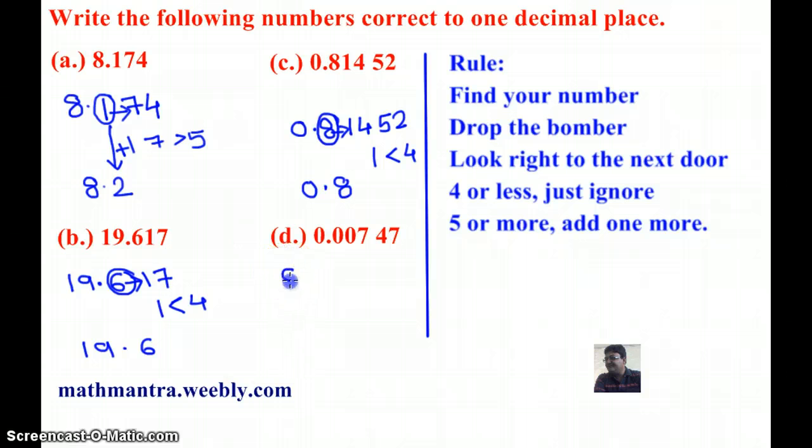And finally, 0.00747. So my number is 0 and the next door number is 0, which is less than 4. And therefore, my answer will be 0.0. That's it. Thank you.